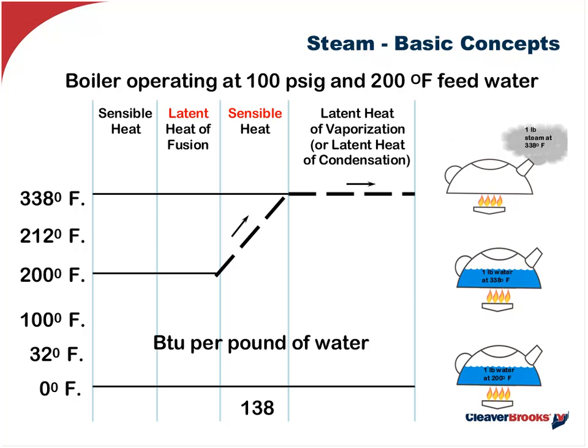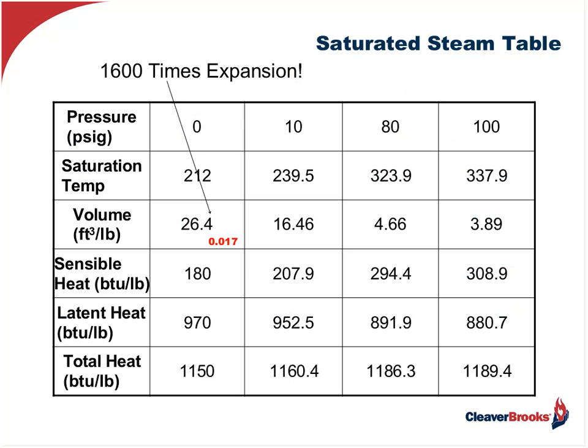The sensible energy is actually the condensate. As I increase in pressure, the amount of latent energy decreases while the amount of sensible energy increases. This is very important to understand when considering where the burner's energy is going and why it's important to return as much of the gold — or the condensate — as we possibly can.